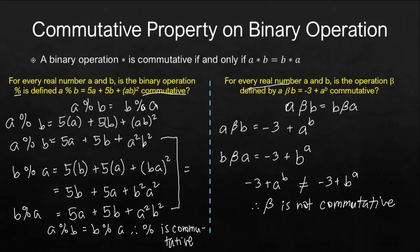So that's it for the commutative property. Take note that when we are dealing with commutative property, even if we interchange the position of a and b in that binary operation, we should still result in an equal answer. Thank you for watching and see you in the next video.